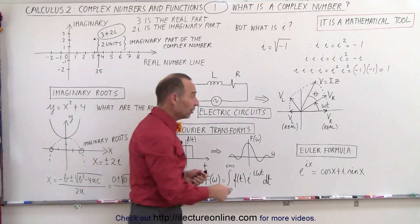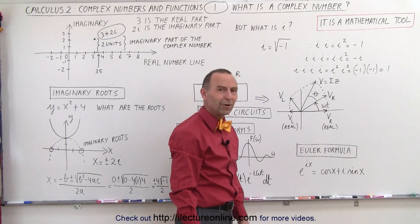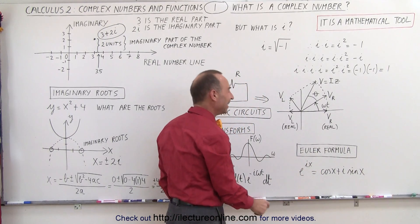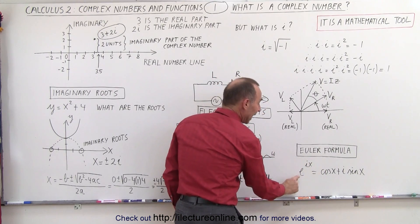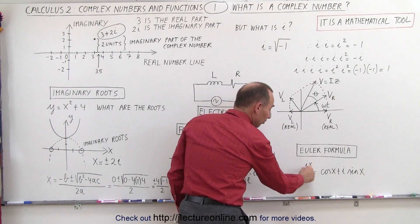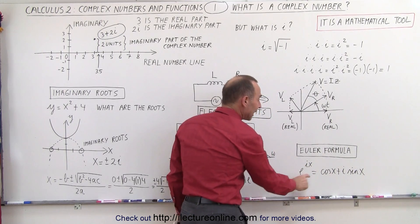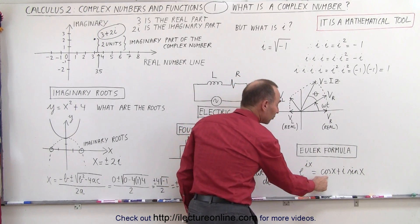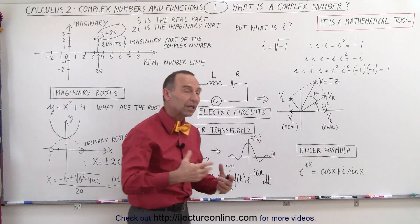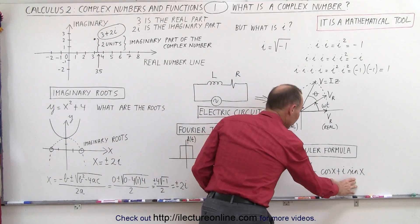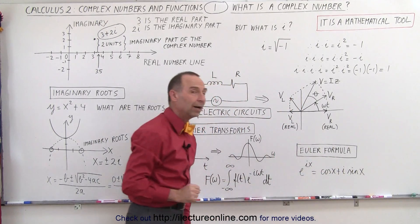And what's also interesting is another application, Euler's formula shows that we can have e to the ix. Again, this is an imaginary number as the exponent of the constant e can then be expressed as the sum of the cosine of x plus i times the sine of x. So we have a relationship between trigonometric functions and exponential functions here through that imagined number i.